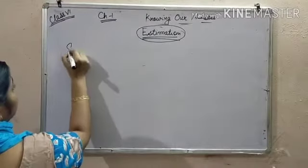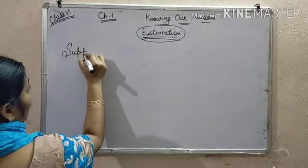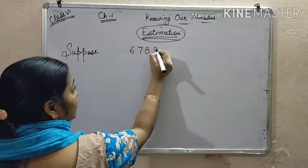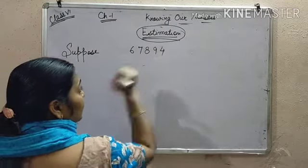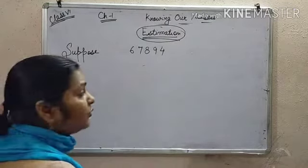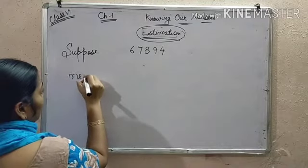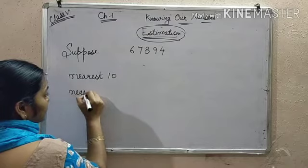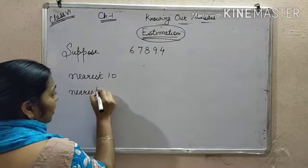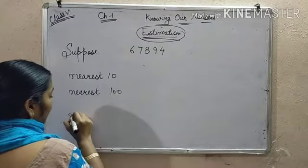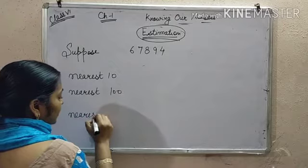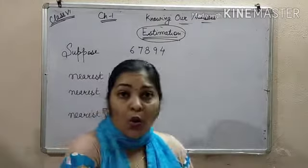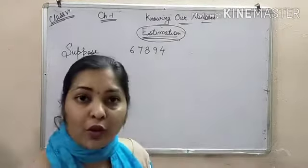Suppose I take a number 6, 7, 8, 9, 4 — that is 67,894 — and I have to approximate it to nearest ten, nearest hundred, and nearest thousand. Now how do we solve this problem?